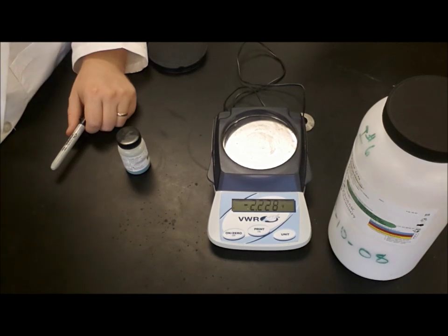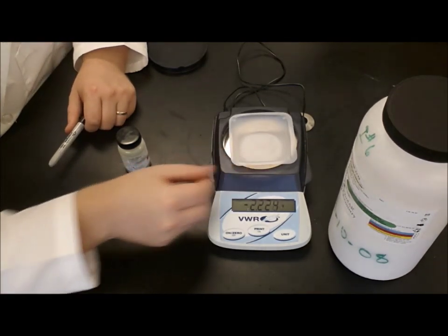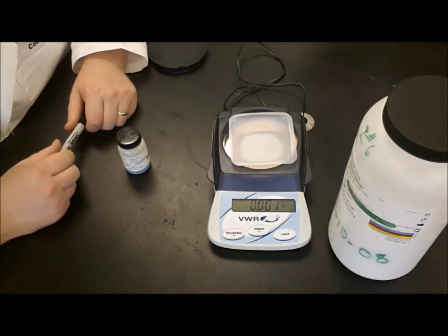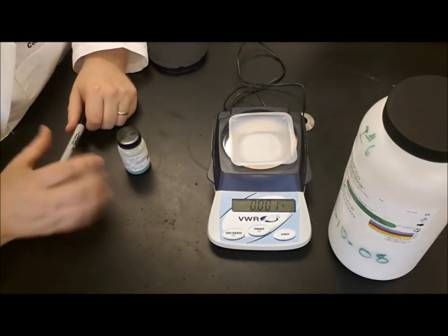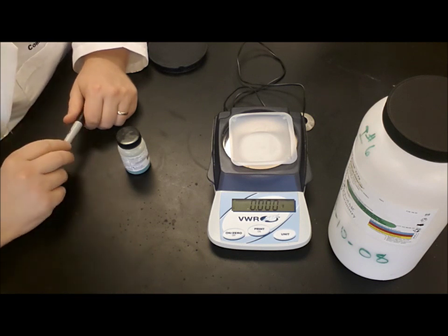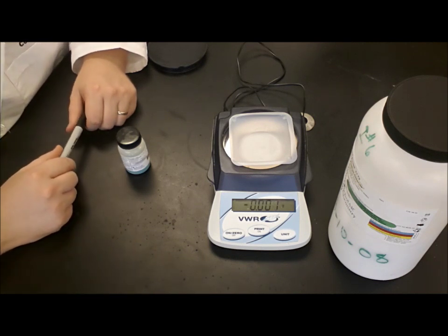So that's how you use the balance. Come up. Put your weigh boat on. Zero the balance. Wait for it to stop zeroing. Measure out your chemicals. Take your chemicals. Use them for whatever you're going to use them for.